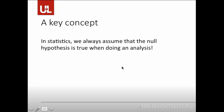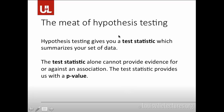A key concept is that we always assume the null hypothesis is true when doing an analysis — this will be important in a little bit. As you do your hypothesis test, say you're doing a t-test between two proportions for groups with C. diff infection rates, you're going to come out with a test statistic. That test statistic just summarizes your set of data. The idea is that since there are so many factors and variables, if you reduce it down to just one number, you can use that number to interpret things. The test statistic alone can't provide evidence for an association — that will provide us with a p-value.